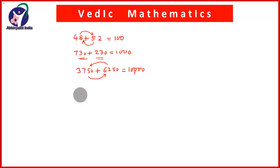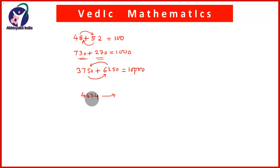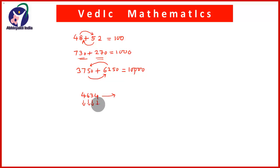Now let us see how to find the complements of any number quickly. Suppose the number is 4,634 and you have to find the complement. Remember: subtract all digits from 9 and the last digit from 10. All digits meaning the first, second, and third digits from 9, and the last digit from 10.